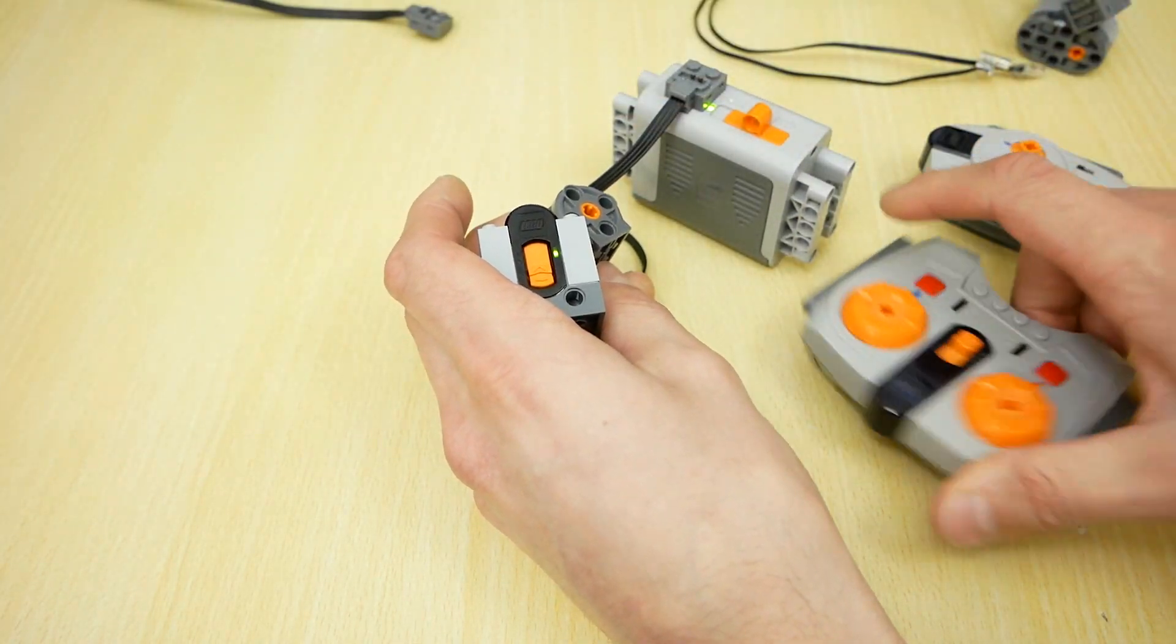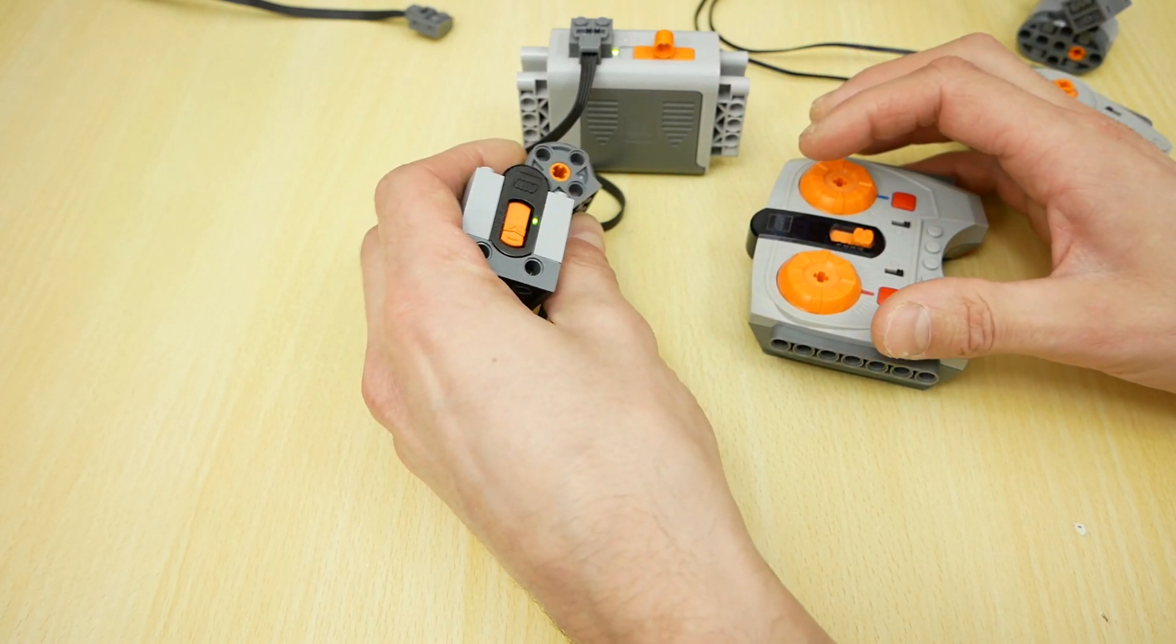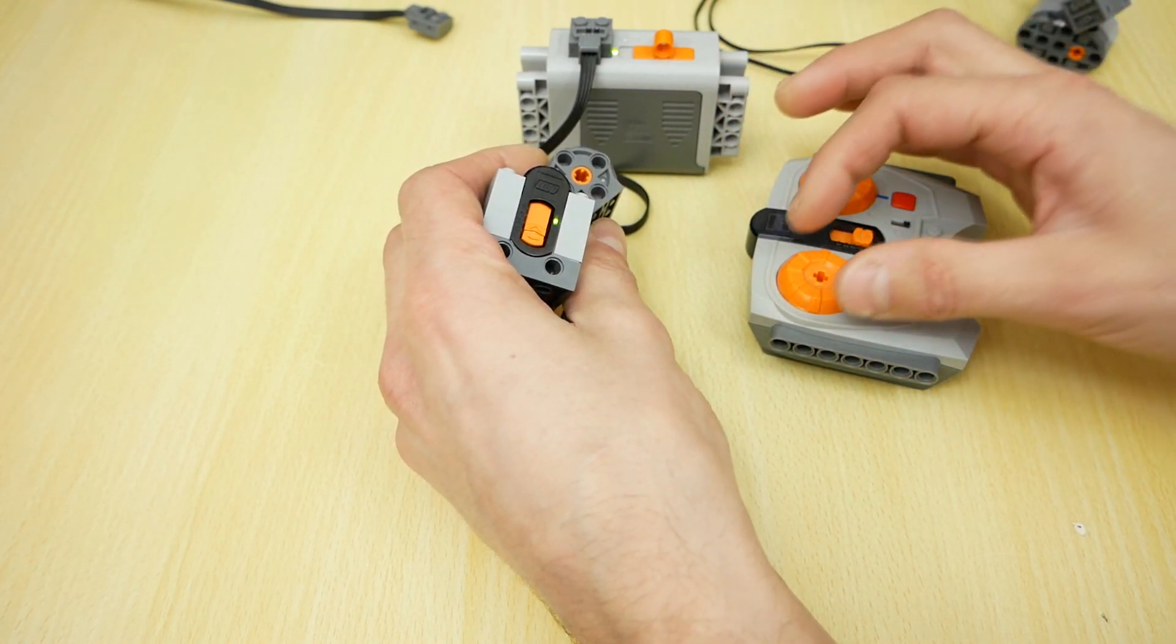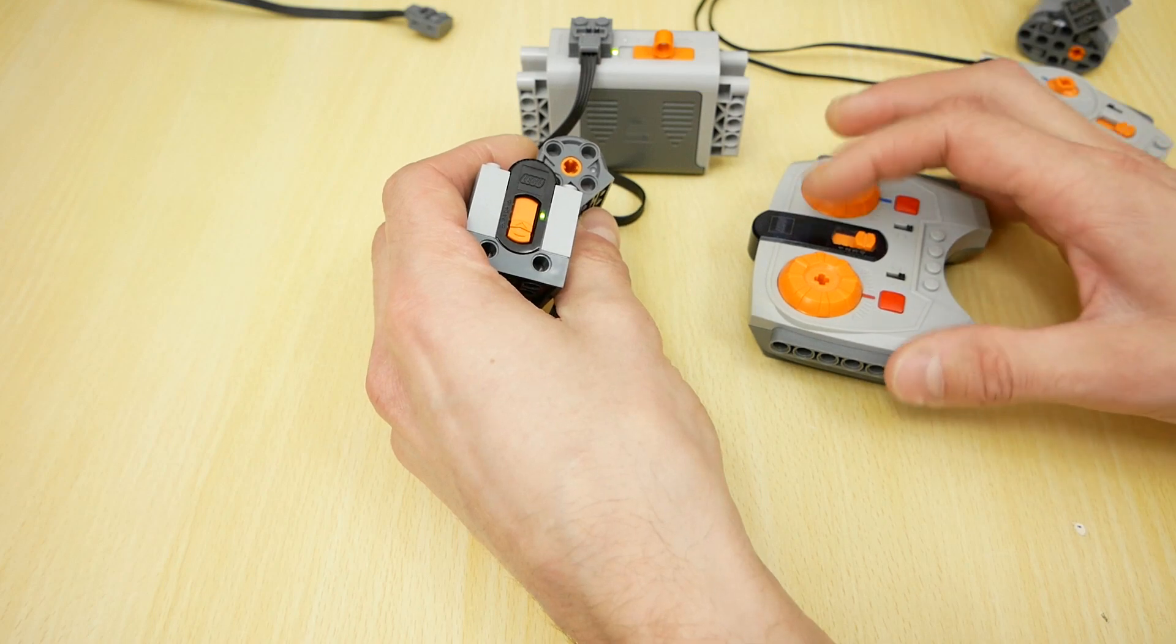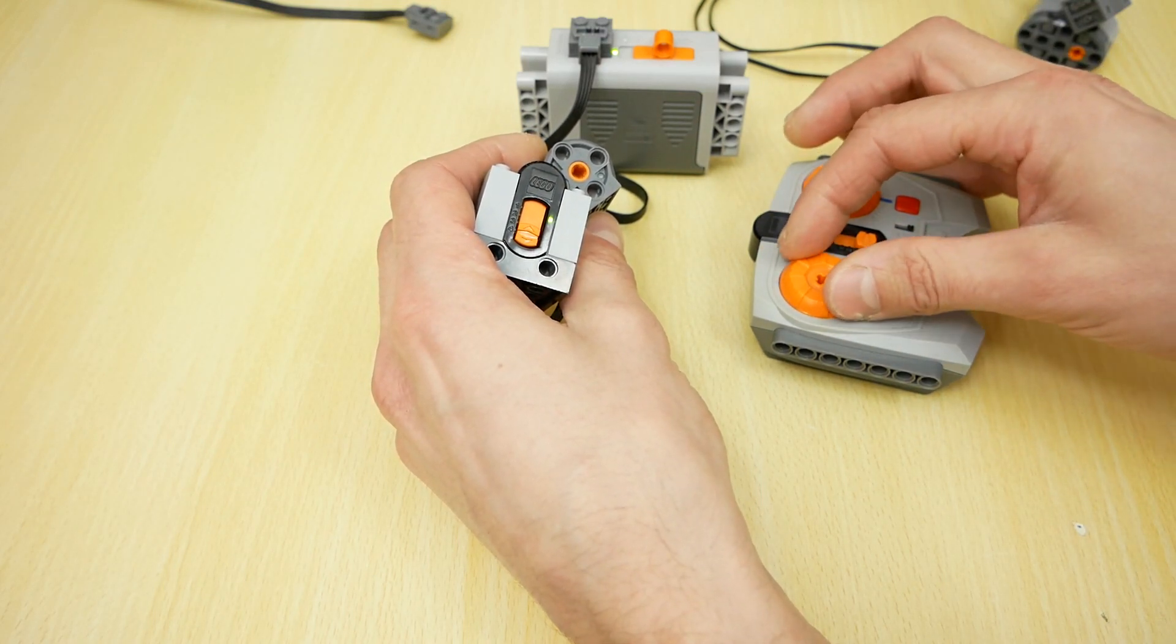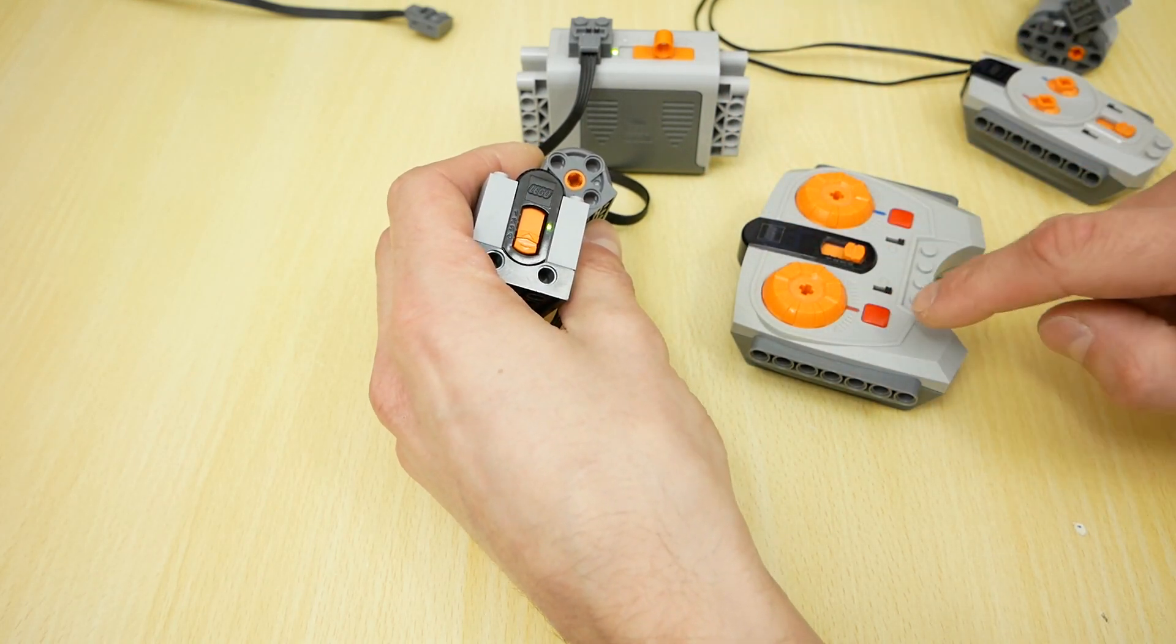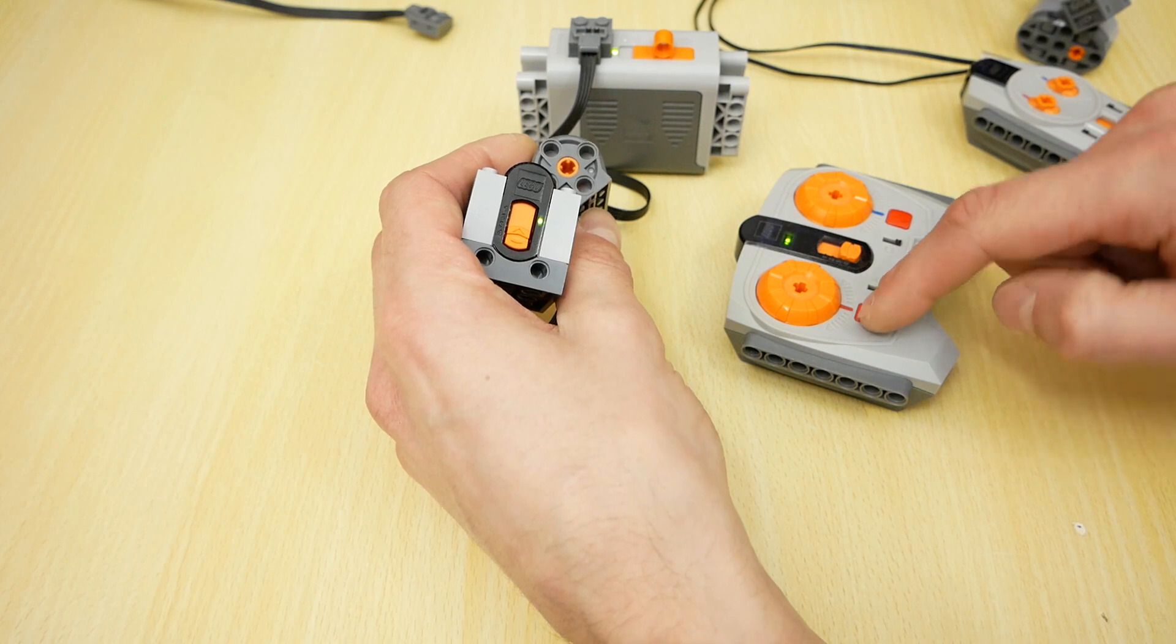And the second remote control unit, used for trains, allows to control the motor speed. Slow, faster, faster, faster, and the fastest speed. And this is very useful stop button.